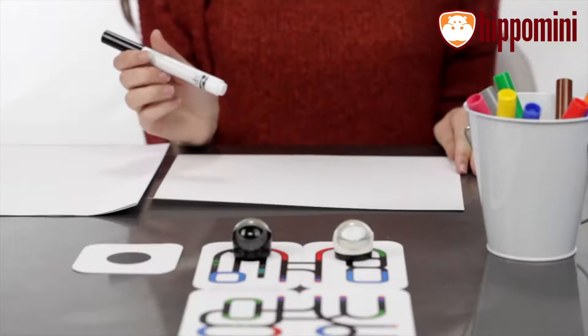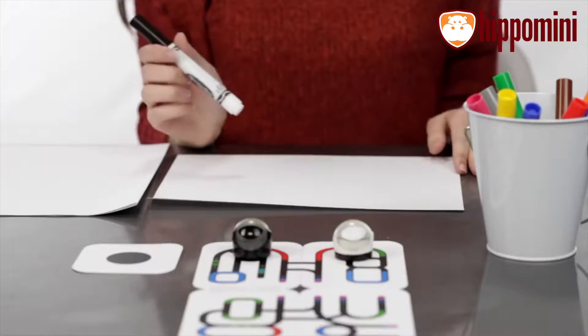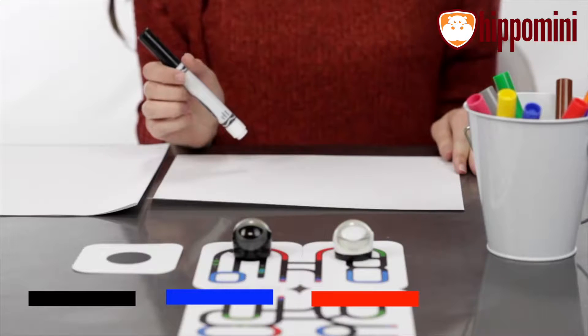To really use Ozobot's color language you'll need a black, blue, red and green marker.